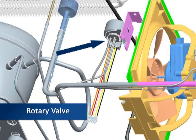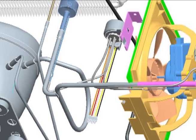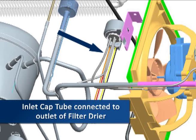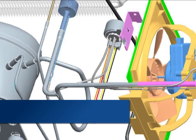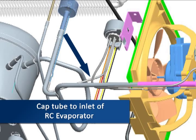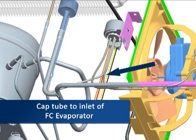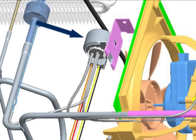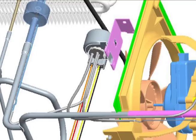The rotary valve consists of a rotating mechanical valve located inside a hermetically sealed enclosure, with three tubes attached. The inlet cap tube is connected to the outlet of the filter dryer. There are two cap tube outputs — one to the RC evaporator and one to the FC evaporator. A magnetic coil slips over the valve enclosure. A digital signal from the control board causes the internal valve to rotate; this signal cannot be measured with a conventional voltmeter. There are three valve positions: valve closed, valve open to the RC evaporator, and valve open to the FC evaporator.